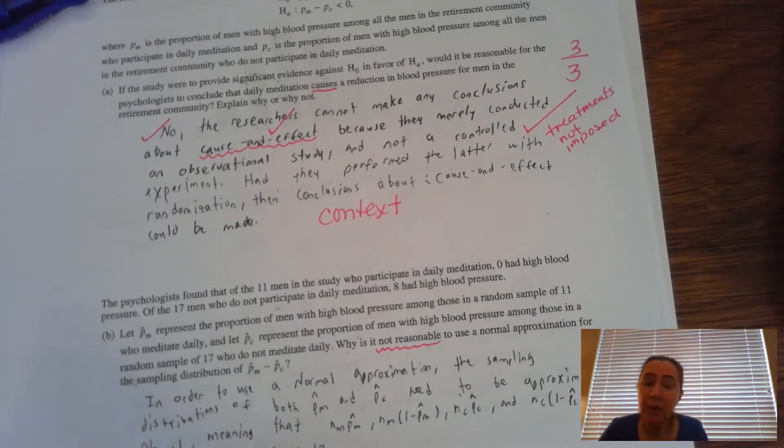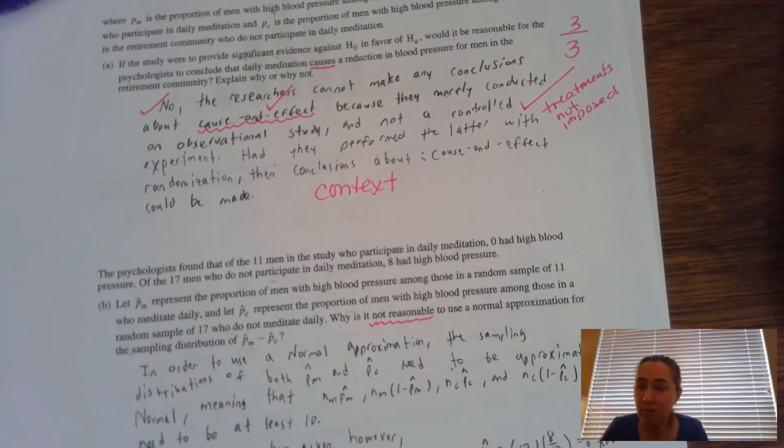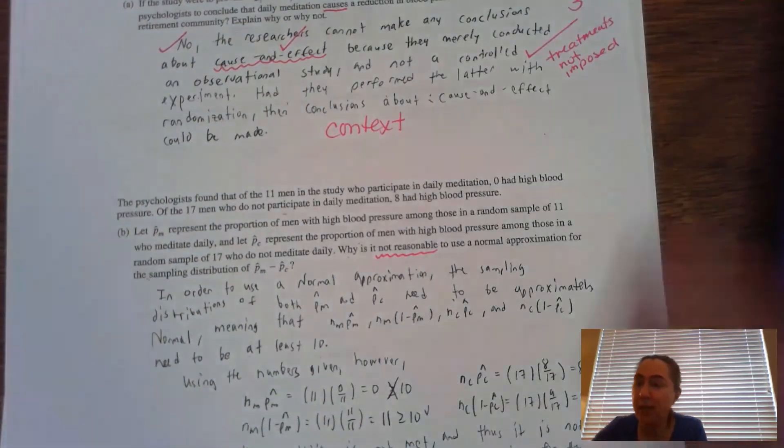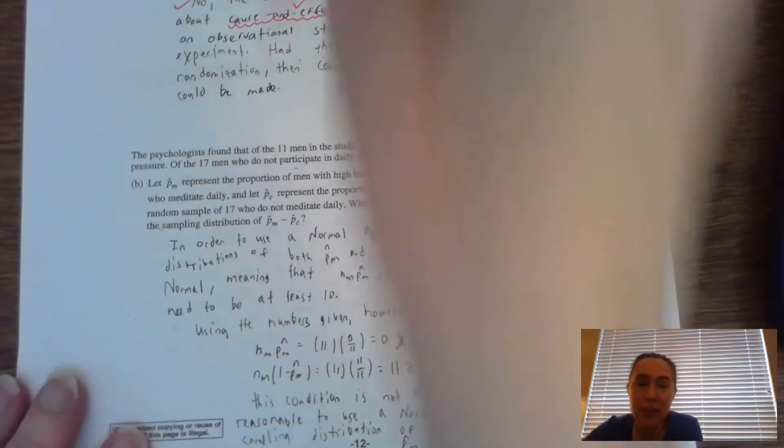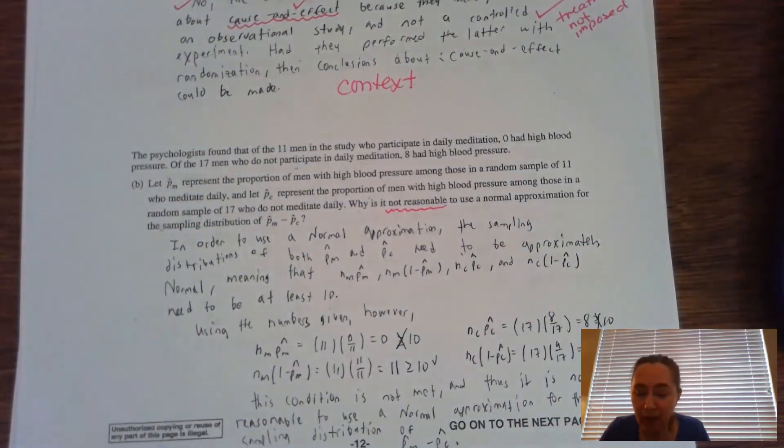One prop Z or two prop Z like this one is. So really what they're wanting you to do is to show that the success failure condition does not work in this particular scenario. Now you can do all nine conditions if you'd like. But you can know that just knowing this, they're only going to be looking for your success-failure condition.